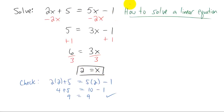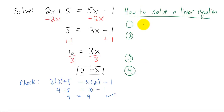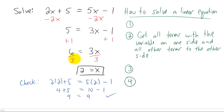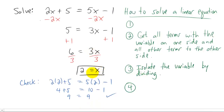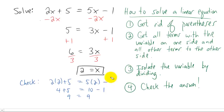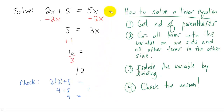Let's write down the steps to solve every linear equation. Step 1 is a surprise step for later — we haven't had an example that requires it yet. Step 2: get all terms with the variable on one side and all other terms on the other side. Step 3: isolate the variable by dividing by the number in front of it. Step 4: check your answer. The one remaining complication is equations that have parentheses — if you see parentheses, you want to get rid of them first.